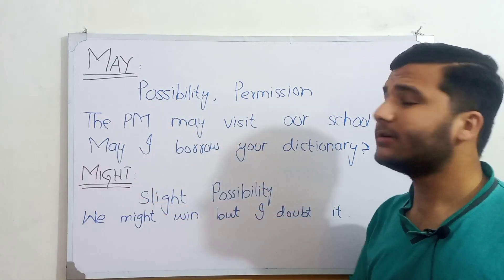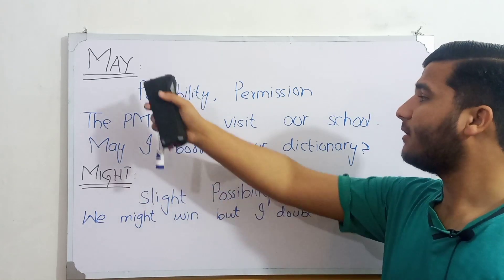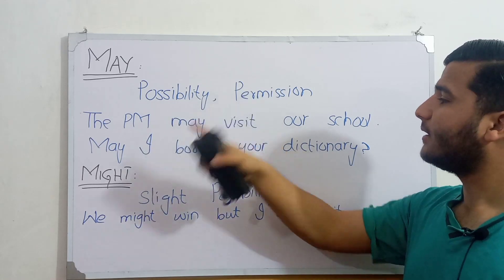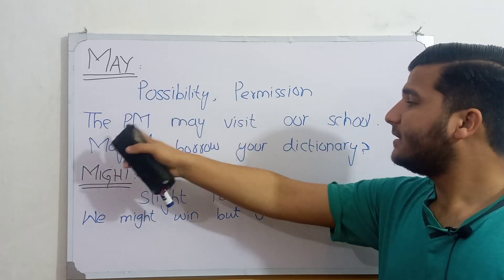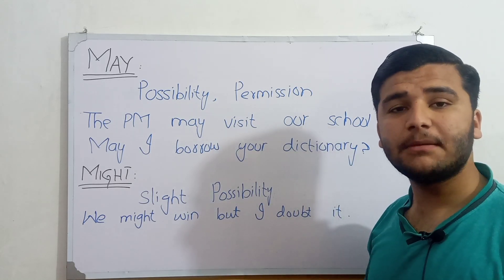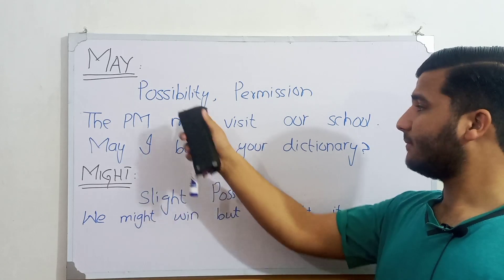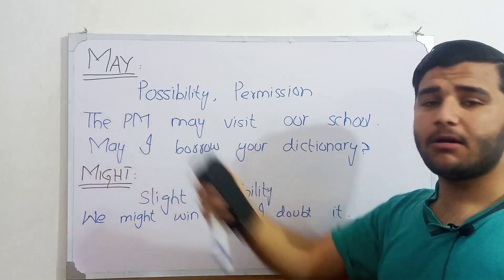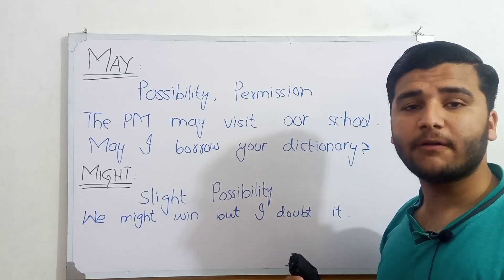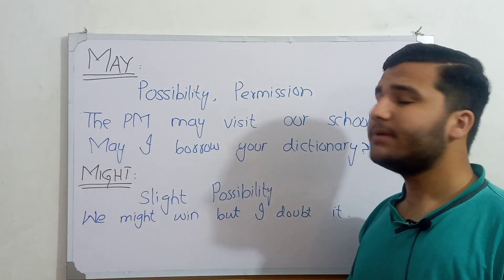Now we will talk about 'may' and 'might.' Both are modal auxiliary verbs. 'May' has two functions: possibility and permission. For possibility: 'The Prime Minister may visit our office.' We are predicting he may come or may not come — we are not sure. 'May' carries approximately a 70% chance of the action happening, while 'might' has only a 30% chance.